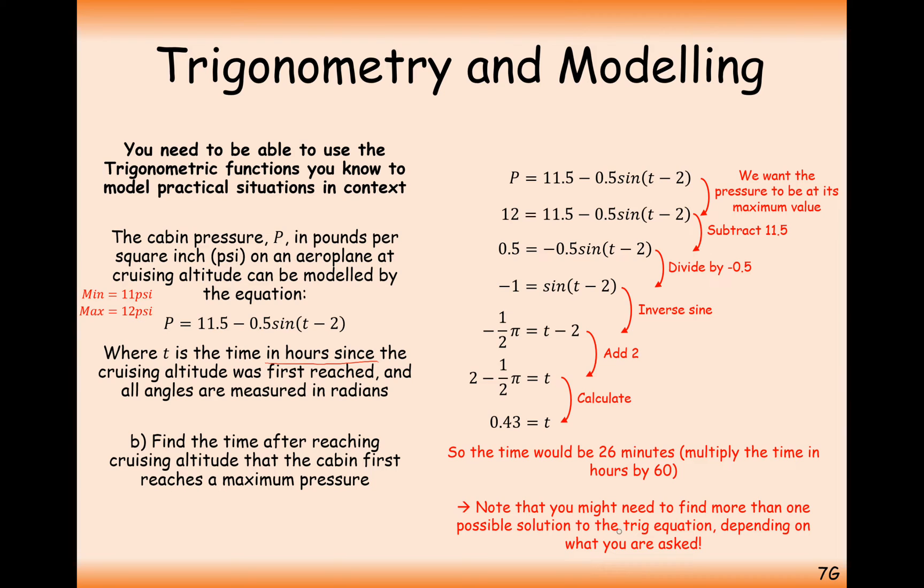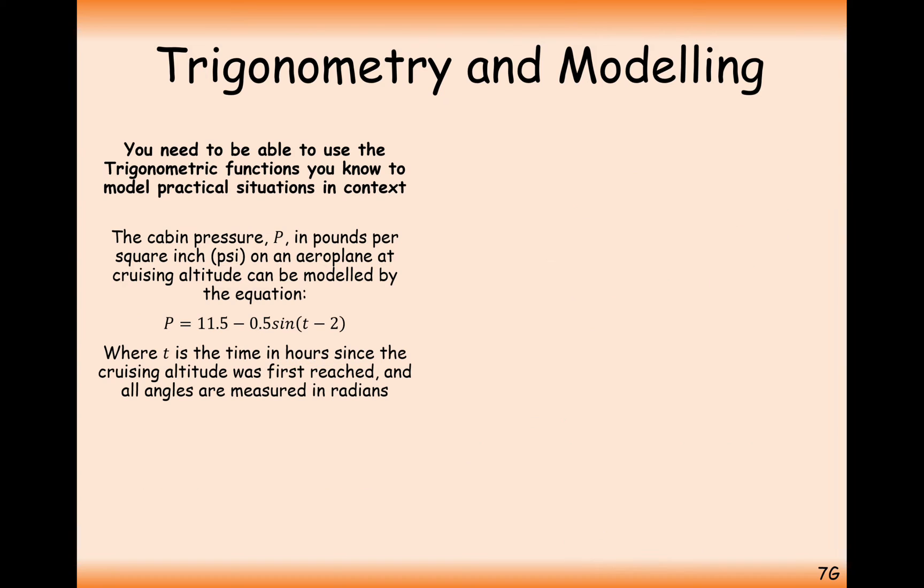Note, you might need to find more than one possible solution to the trig equation depending on what you're being asked. Moving on to the next bit, let's calculate the cabin pressure after 5 hours at cruising altitude. Just plug in T equals 5, substitute that into the equation and calculate. You get 11.43 psi.